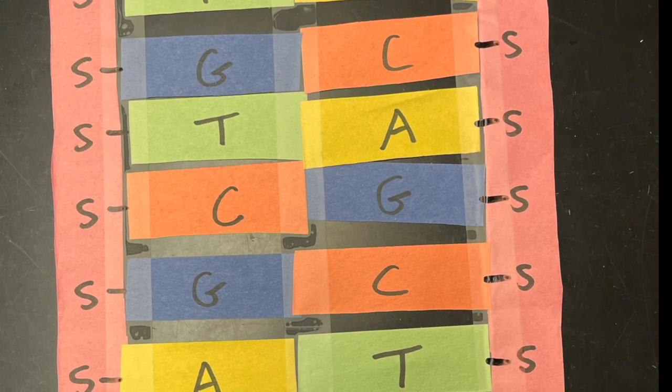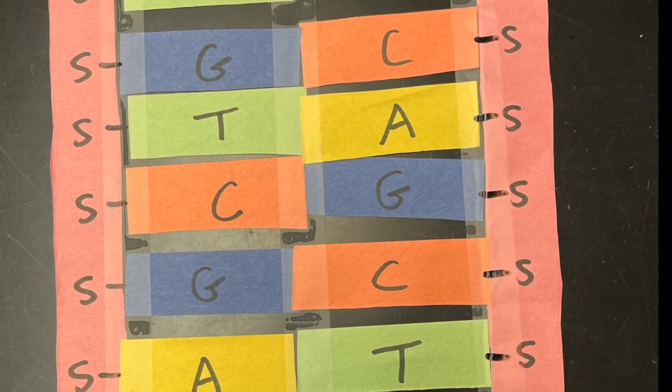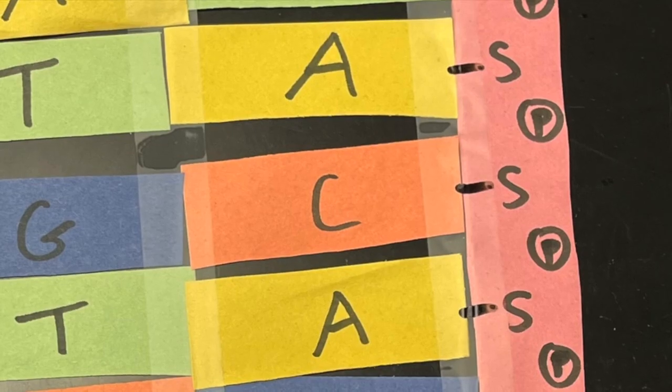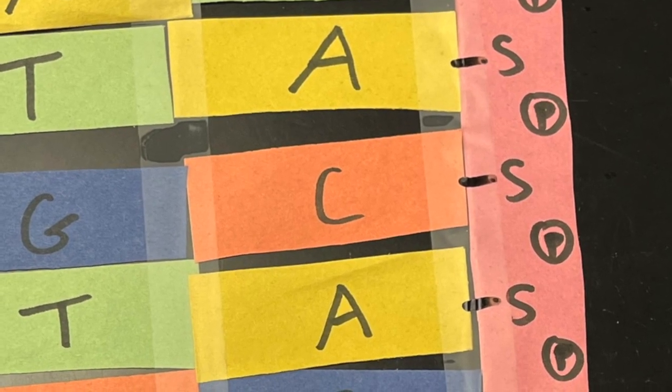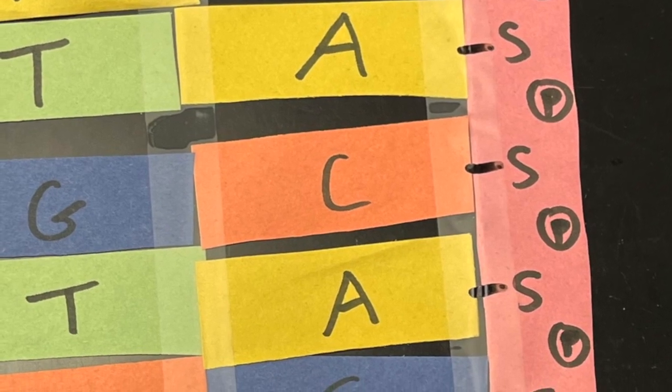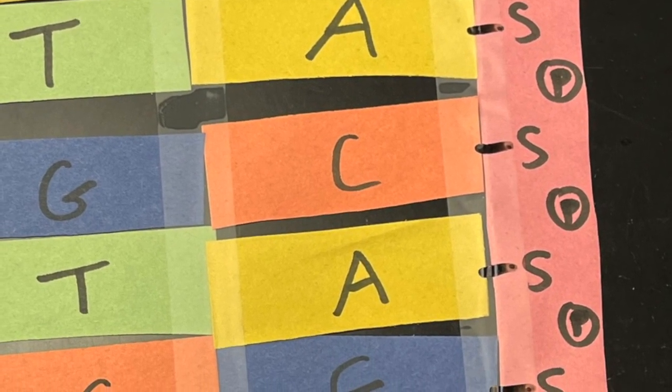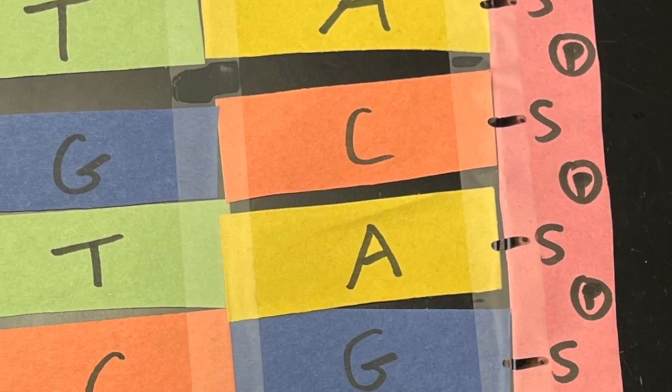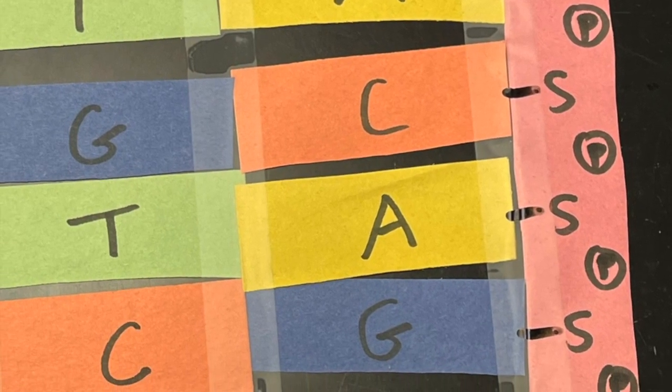Now it's a sugar phosphate backbone, so we're going to have to add our phosphate groups next. To do this, basically you want to put a P with a circle around it in between but on the far side to the outside between each of the S's.